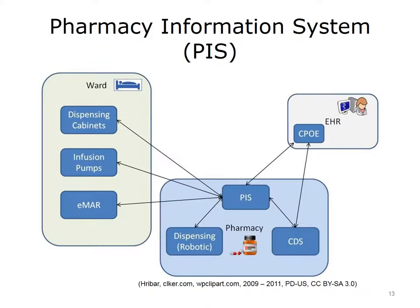Another part of a hospital information system is the Pharmacy Information System, or PIS. The Pharmacy Information System is responsible for coordinating all the activities related to pharmacy operations, including the management of prescriptions, maintenance of the inventory of medications, and the generation of reports. The pharmacy usually has a Clinical Decision Support System, or CDS, that automatically checks for allergies and drug-to-drug interactions. In addition, the pharmacy may have electronic dispensing systems facilitated by robots.